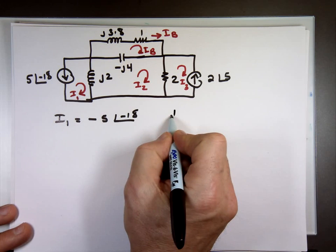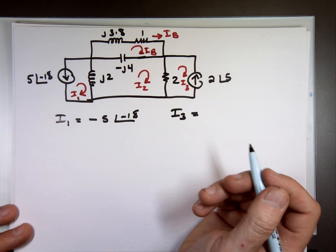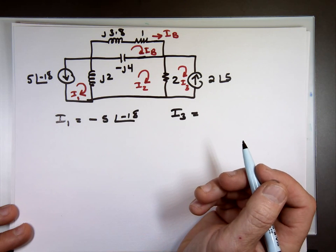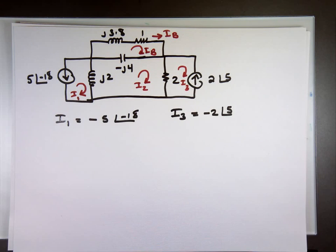What's I sub 3? Negative 2 angle 5. So two of these I know the value for them. So I only have really two unknowns.